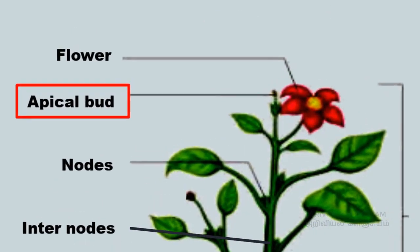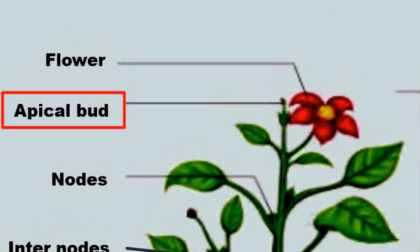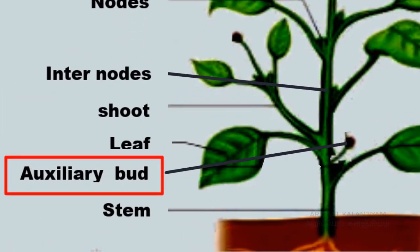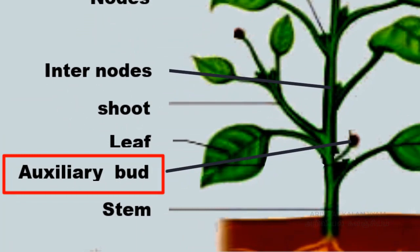The bud at the tip of the stem is known as the apical or terminal bud. The buds at the axils of the leaves are called axillary buds.